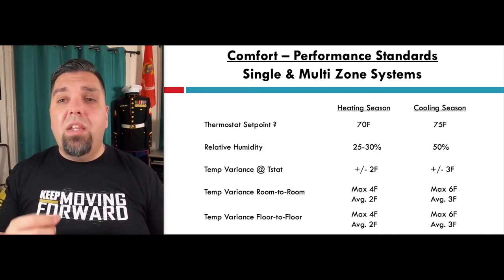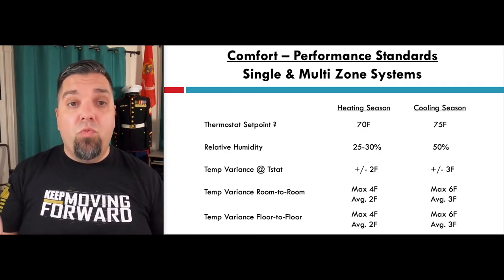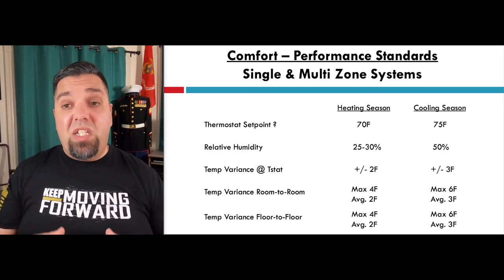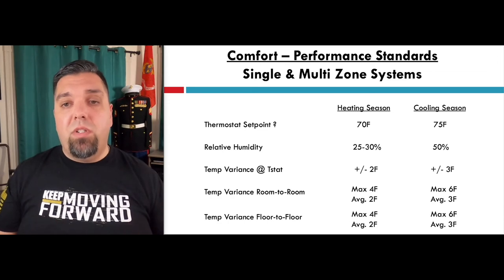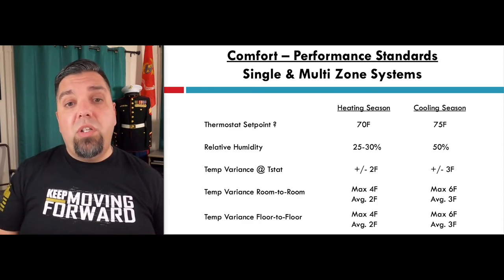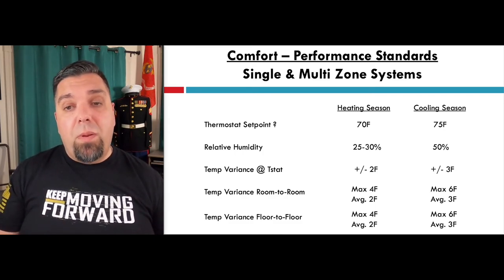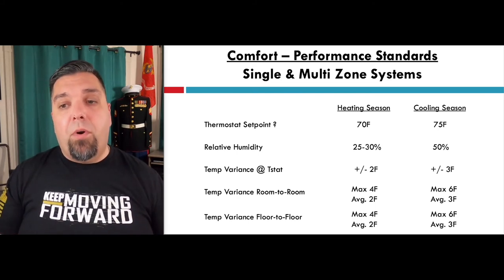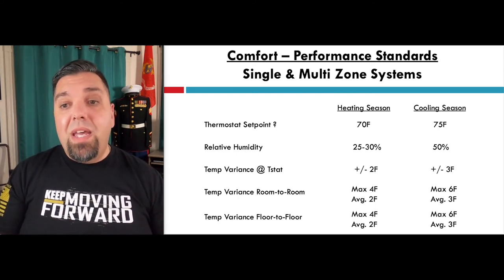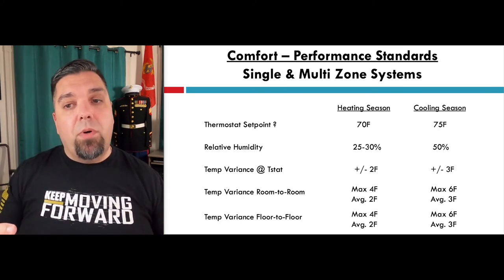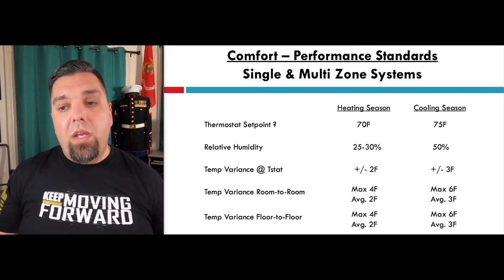In the cooling season, you have a little more leeway. Relative humidity should stay close to 50%, and we're allowed plus or minus three degrees from the thermostat — so anywhere from 72 to 78 degrees is acceptable. However, if you have more than a three-degree room-to-room temperature difference, you'll start getting nuisance calls and homeowners will notice discomfort as they move between rooms. Anything more than six degrees difference indicates a balancing issue, sizing problem, ductwork problem, or airflow problem. The same standards apply floor to floor. You have slightly more swing in the cooling season than the heating season. If conditions fall outside these ranges, investigate — most likely it's a zoning issue.